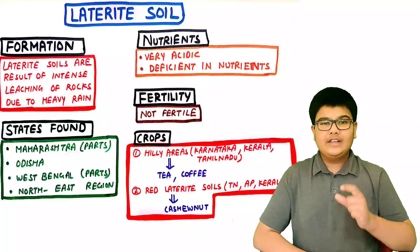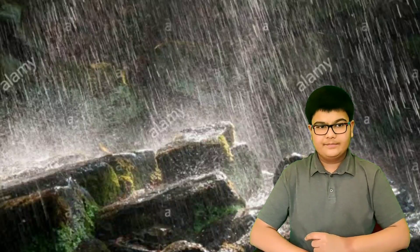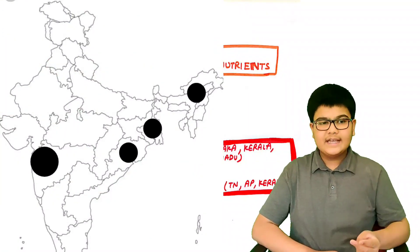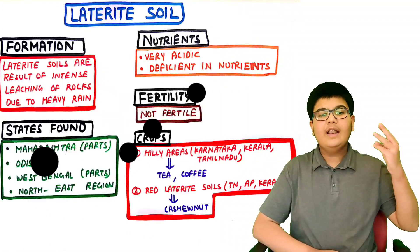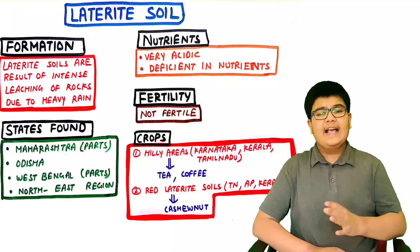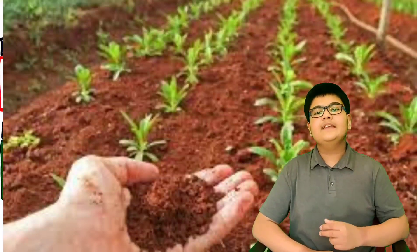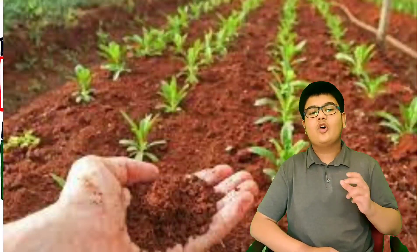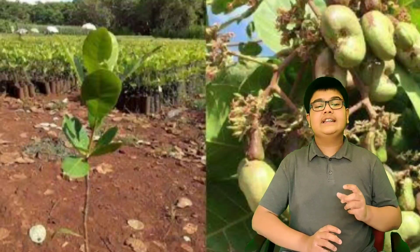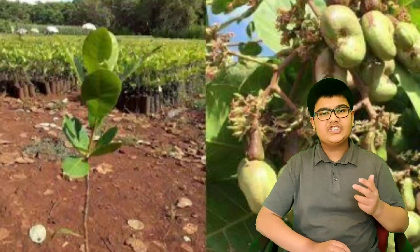Laterite soil is formed as a result of intense leaching due to heavy rain. It is present in regions of heavy rainfall such as Maharashtra, Odisha, parts of West Bengal, and the northeast region. This soil is not fertile — it is very acidic and deficient in important plant nutrients. However, after proper treatment, it can be used for growing crops such as tea and coffee in the hill areas of Karnataka, Kerala, and Tamil Nadu. Red laterite soil is suitable for growing cashew nuts in Tamil Nadu, Andhra Pradesh, and Kerala.